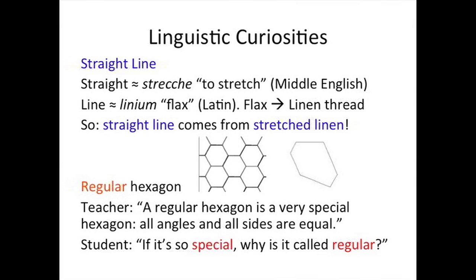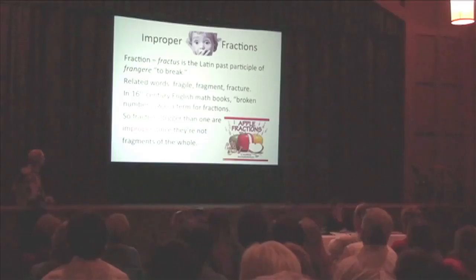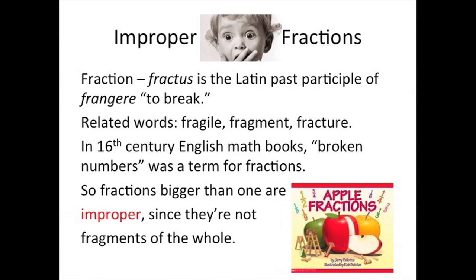And regular — when I was teaching, I said a regular hexagon is very special, and they said, 'If it's so special, why is it called regular?' Here's improper fractions: fraction comes from a part of something, so fractions bigger than one are improper because they're not a part of something — they're not a fragment.